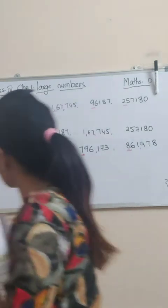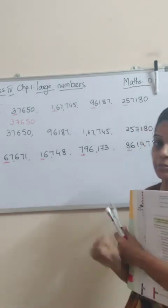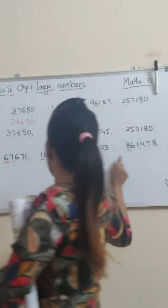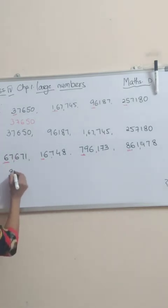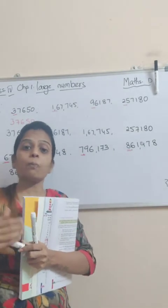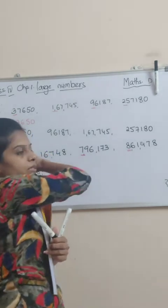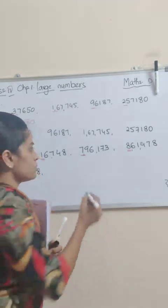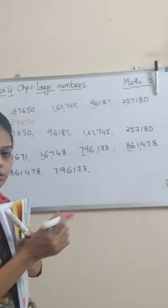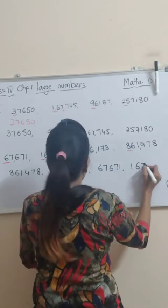Sorry students, a big mistake from me — we are doing descending order. So whenever we are doing descending order, students, sab se pehle ham bade wale numbers lehenge. Toh bade wale numbers mein yeh doh numbers hain — toh pehle bada kaunsa hai? Eight. So we will write 861478. Then the next number is 796173. Ab hum compare karenge five digit numbers mein — toh six wala number bada hain. Pehle bade wale numbers hain kyunki hum descending order kar rahe hain. Chhote wale numbers hain baad mein.